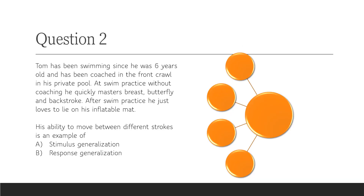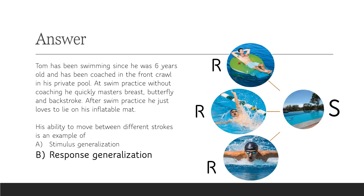Question 2: Tom has been swimming since he was six years old and has been coached in the front crawl in his private pool. At swim practice, without coaching, he quickly masters breaststroke, butterfly, and backstroke. His ability to move between different strokes is an example of stimulus generalization or response generalization? The answer is response generalization. We have only one stimulus — the pool — and different responses: he has learned to swim the front crawl and generalized to backstroke, butterfly stroke, and breaststroke.